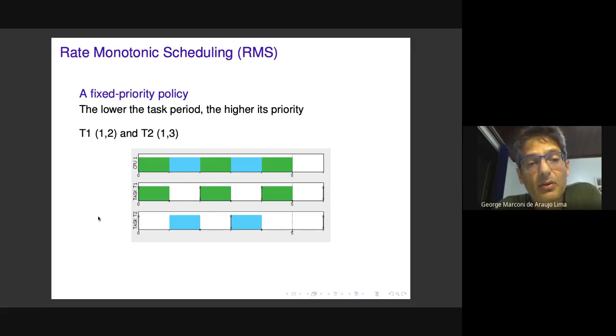As you can see, the schedule executes task one whenever it's ready, delaying task two, which is the lowest priority task.